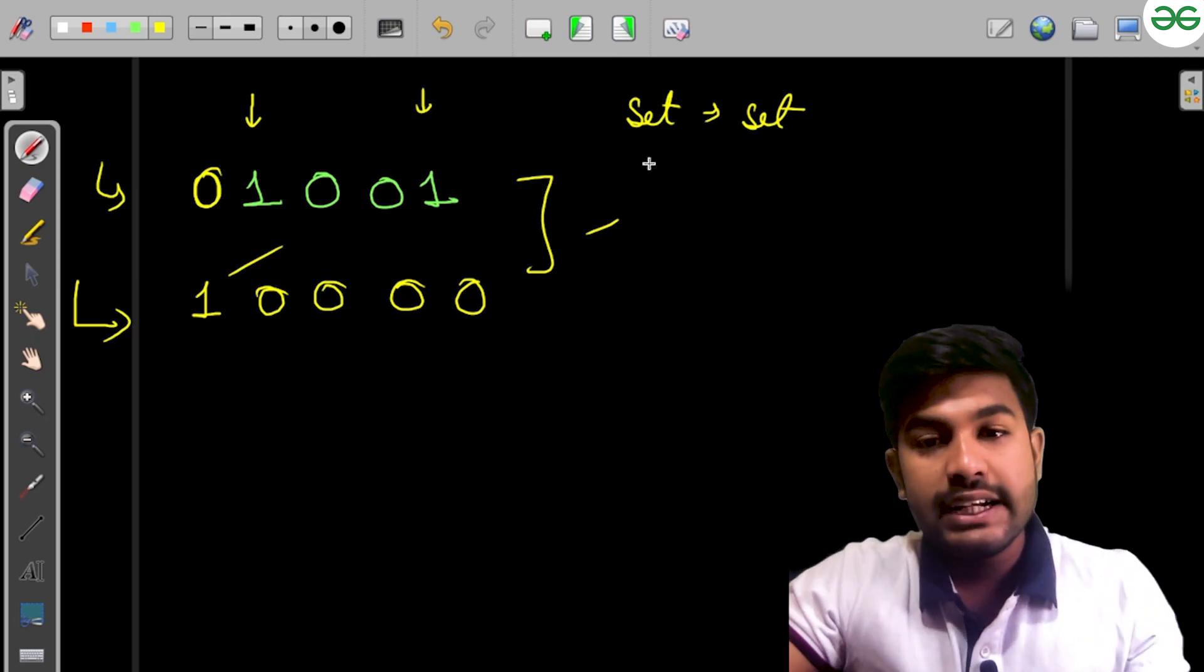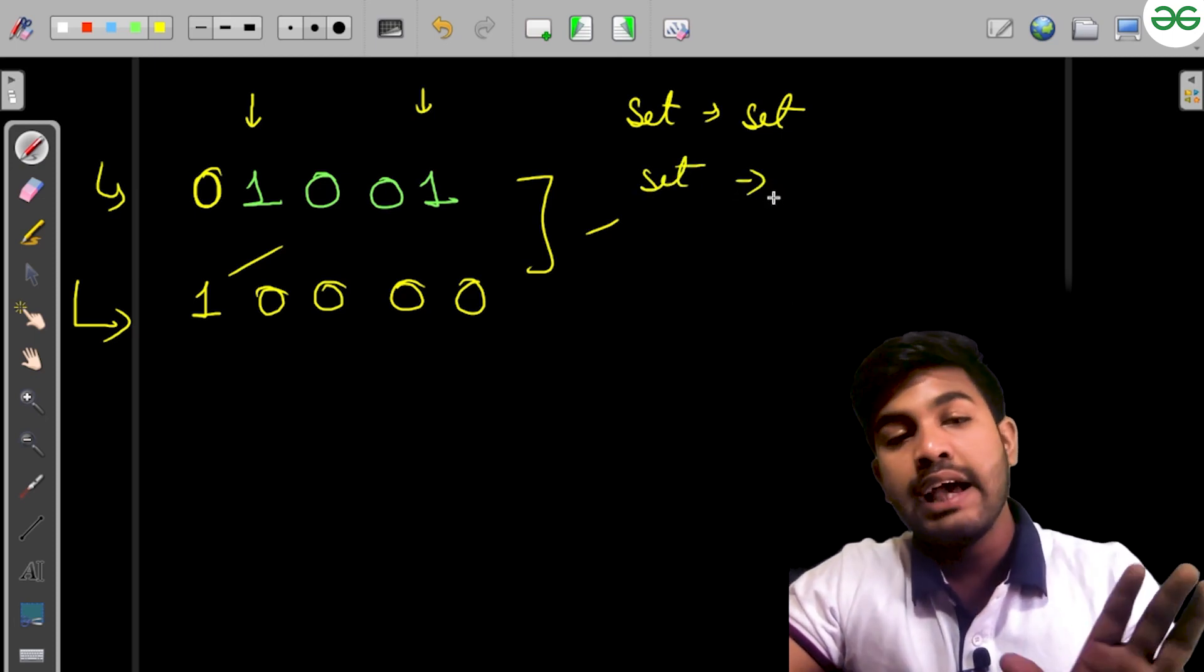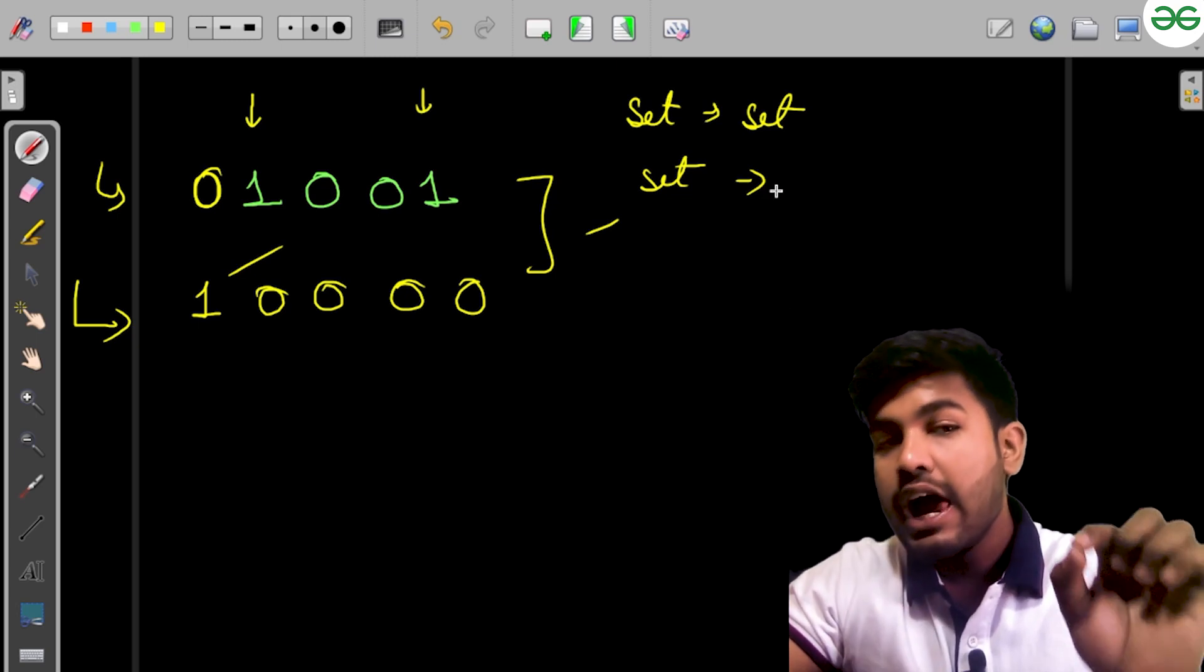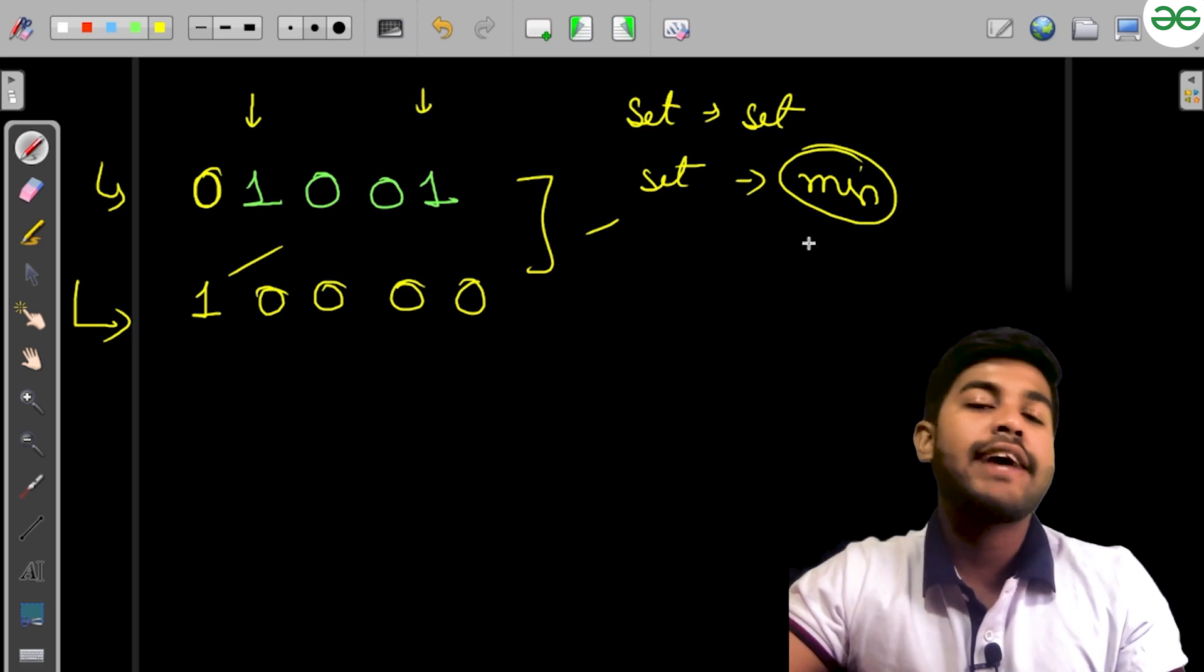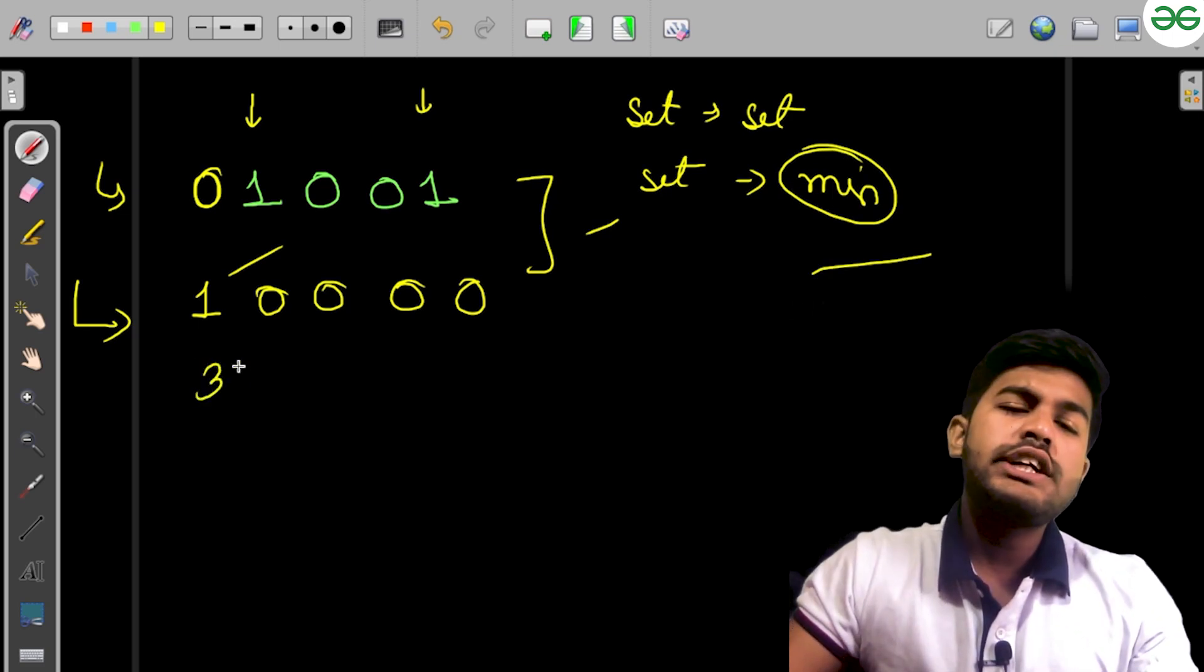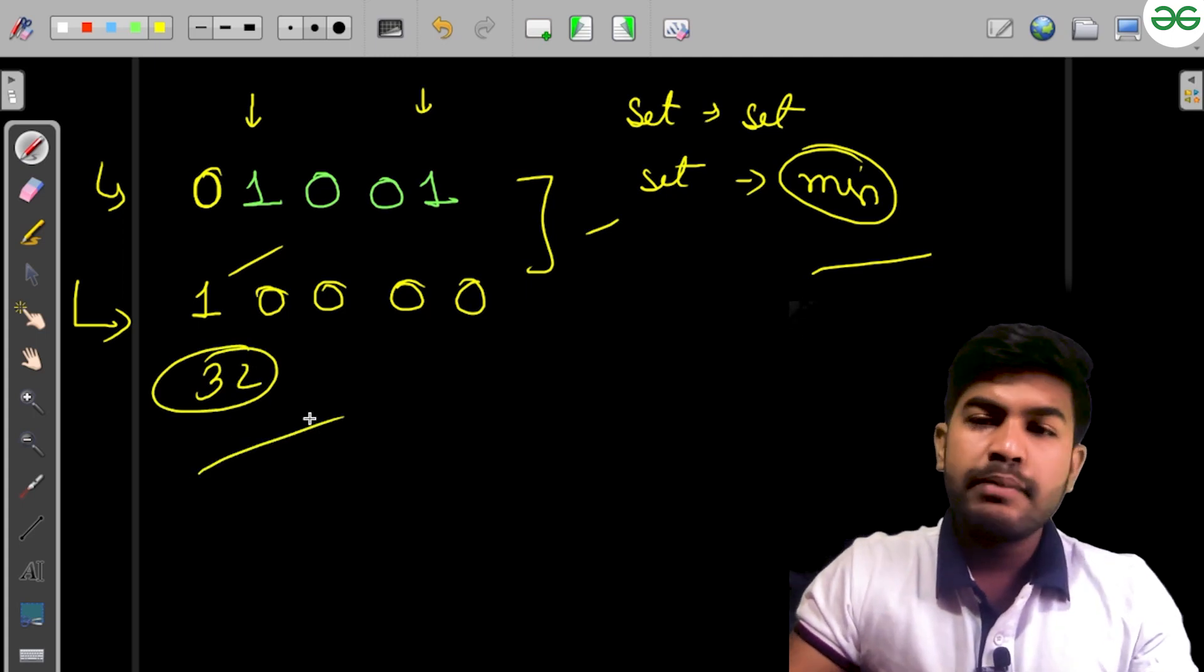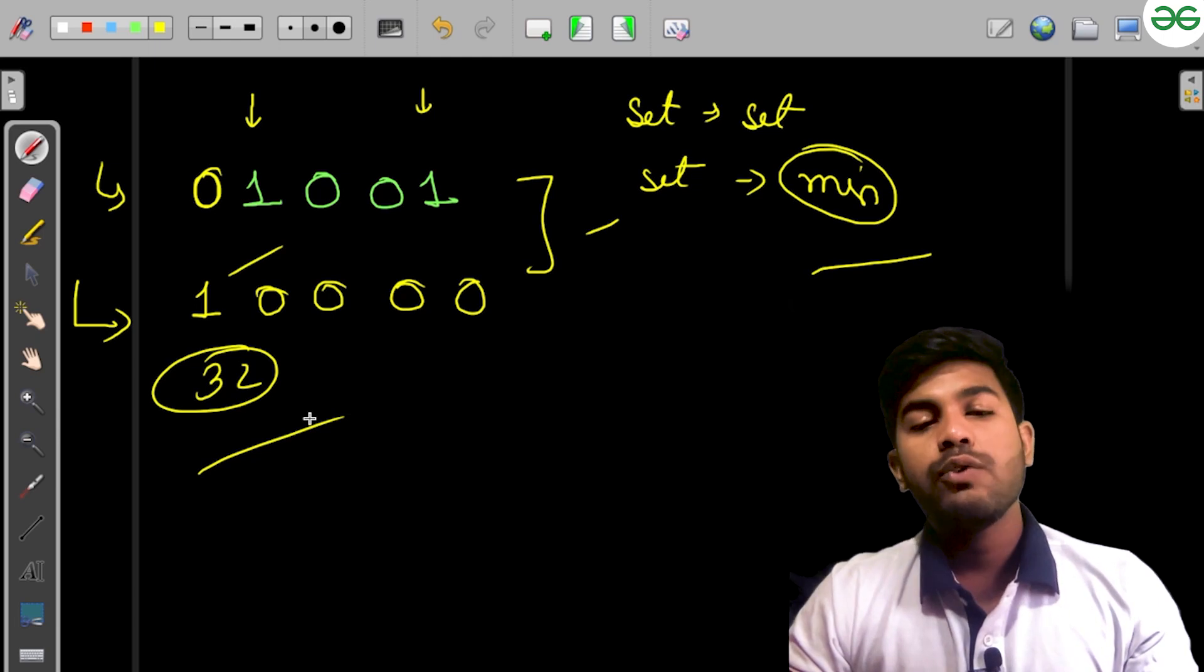When that value is unset, we can set that value and see how many numbers we need to set, then compare it with the minimum answer we've calculated till now. We need to check at most 32 bits because the number is small enough.